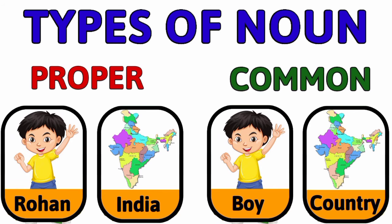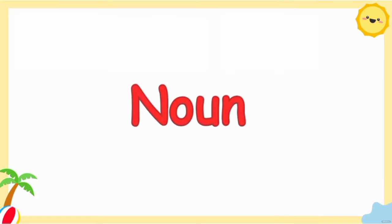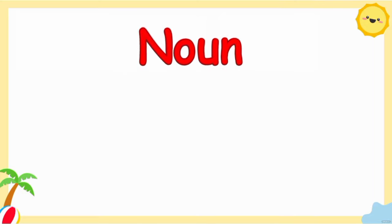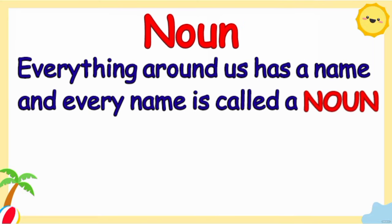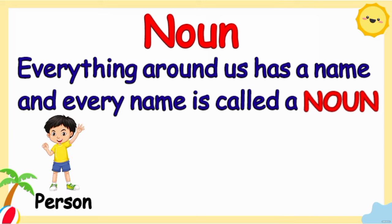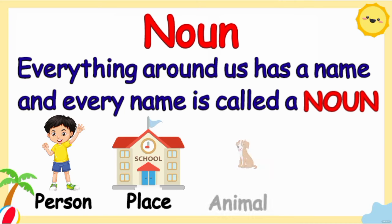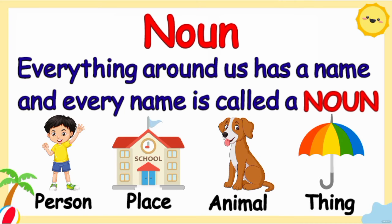Let's learn about two types of noun: proper noun and common noun. But before that, let's understand what is a noun. Everything around us that we see has a name, and every name is called a noun. Name of a person, place, animal, or anything.